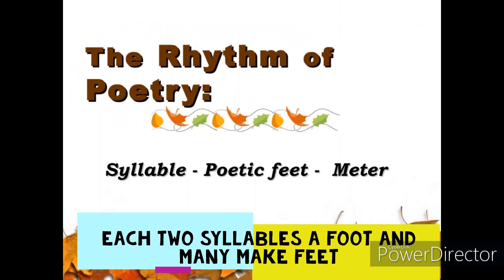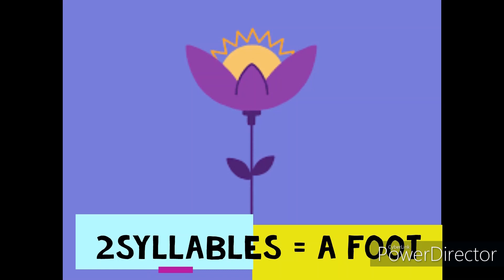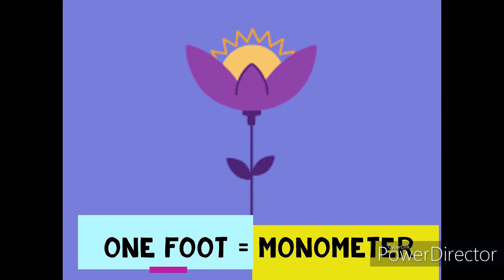When you divide a line into syllables, you get a number of syllables within a set of words. Each two syllables is called a foot, and feet together make a meter. Two syllables give one foot. If you have one foot, it is called a monometer — mono, because it is one foot. One foot means two syllables.